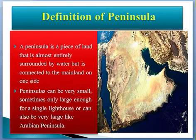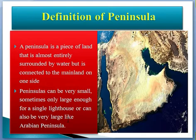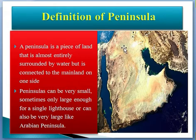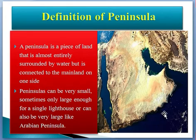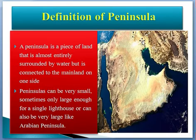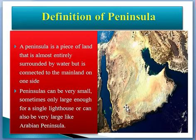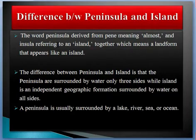A peninsula can be very small, sometimes only large enough for a single lighthouse, or can also be very large, like the Arabian Peninsula. As you can see, the Arabian Peninsula is surrounded on three sides by water, but one side is connected with the mainland. The Arabian Peninsula is actually the world's largest peninsula.